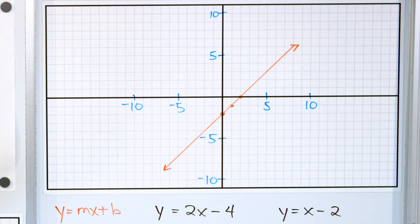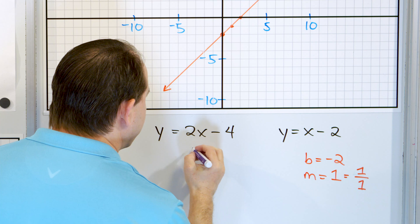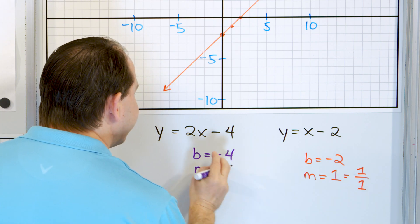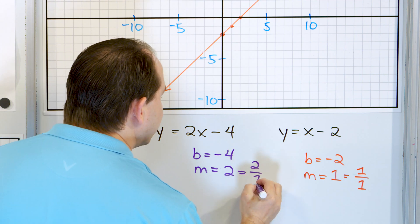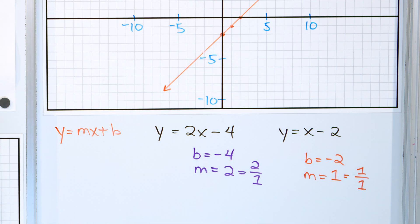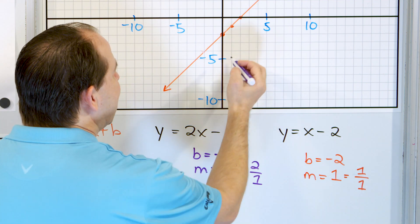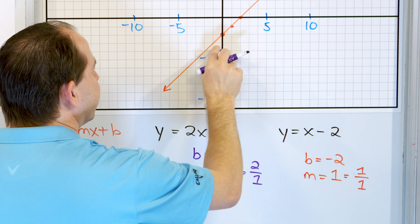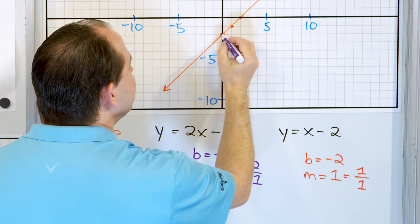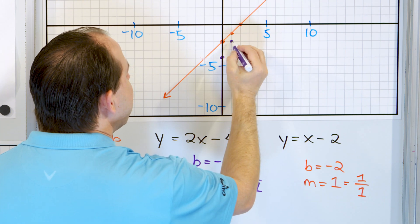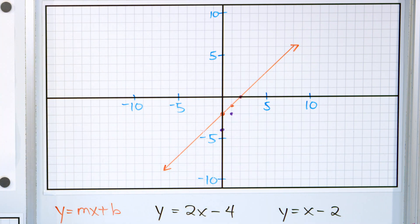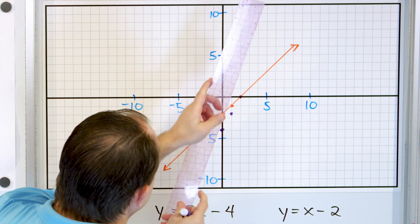For this other line, y equals 2x minus 4 — what is the y-intercept? The y-intercept is negative 4. And the slope is whatever is in front of x, which is 2 — a rise of 2 and a run of 1. So we go to the y-intercept of negative 4, and the slope is 2: up 2, then over 1. And then up 2 and over 1 again. And then I can draw a line through these points.